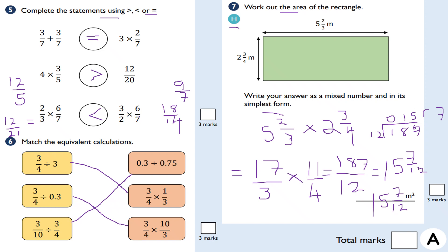That's how we multiply mixed numbers — always change them into improper fractions first, then do top by top and bottom by bottom: multiply the numerators together and the denominators together. For dividing fractions, remember the KFC method: keep, flip, change — keep the first fraction, flip the second, and change it to a multiplication. That's the end of today's video. Thank you so much for watching.